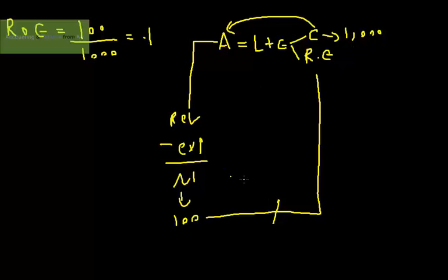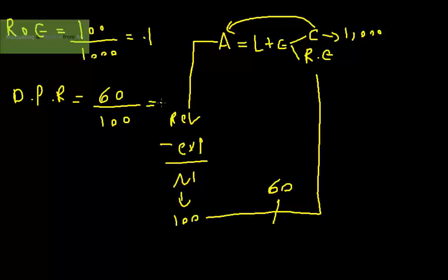Therefore, company management decided to pay a dividend of $60. The dividend payout ratio equals $60 divided by net income ($100), which equals 60%.